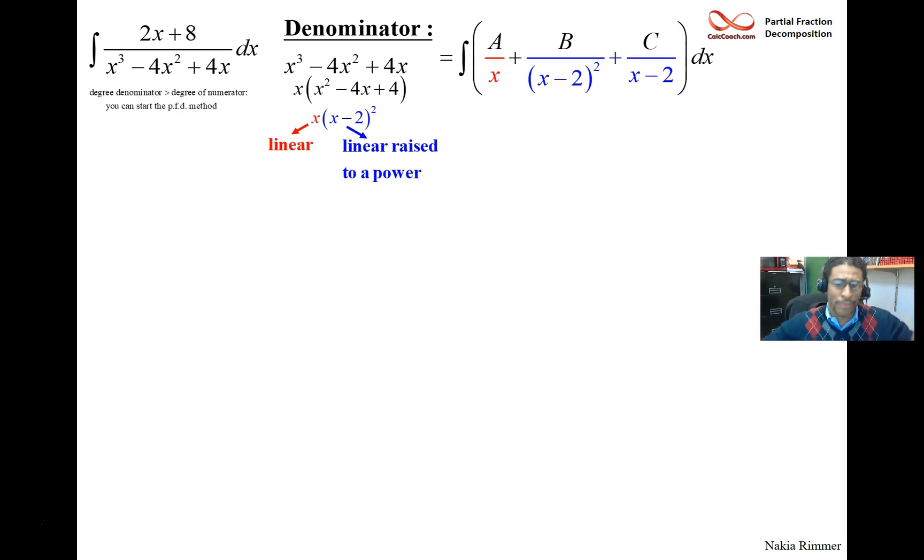But there's some algebra that we need to do. We need to figure out the constants. What is A? What is B? What is C that makes this happen? And the way we figure out the constants is by trying to put it back together. Find out what that common denominator is, which was the original guy x times the quantity of x minus 2 squared, and execute putting these three fractions back into one.